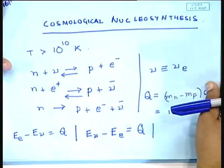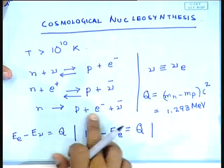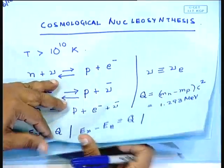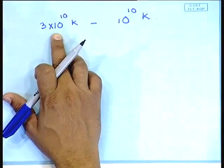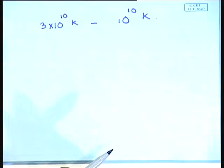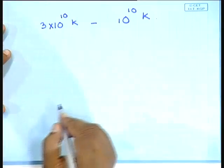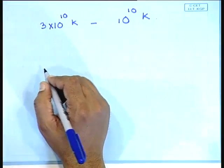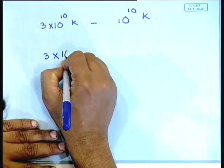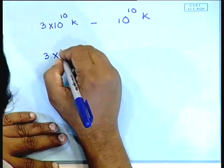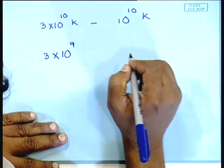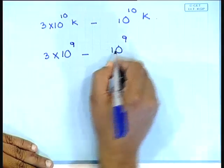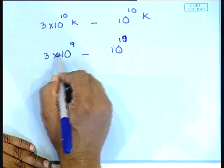The different reactions we had considered for neutron-proton conversion go out of equilibrium somewhere between 3×10^10 and 10^10 Kelvin, and then somewhere between 3×10^9 and 10^9 Kelvin — so somewhere between 10^10 Kelvin and 3×10^9 Kelvin.